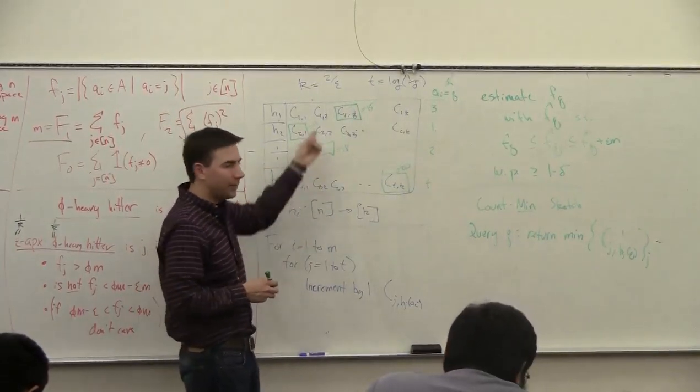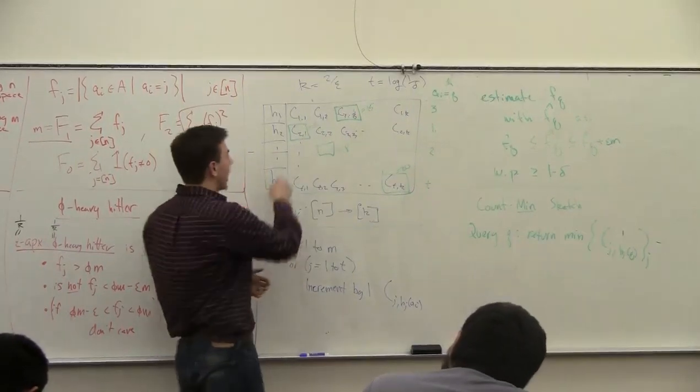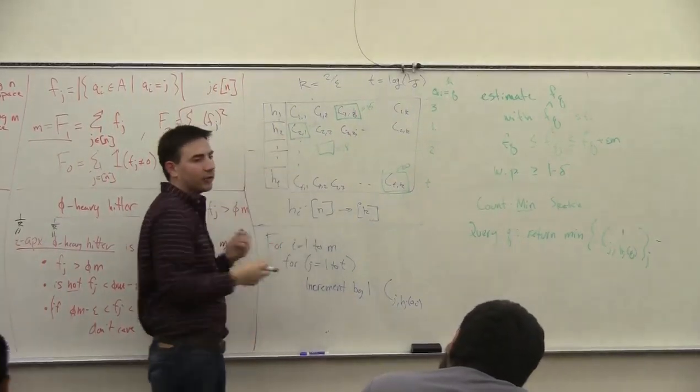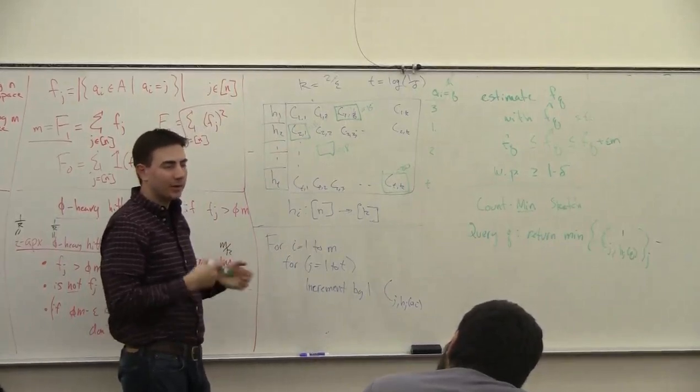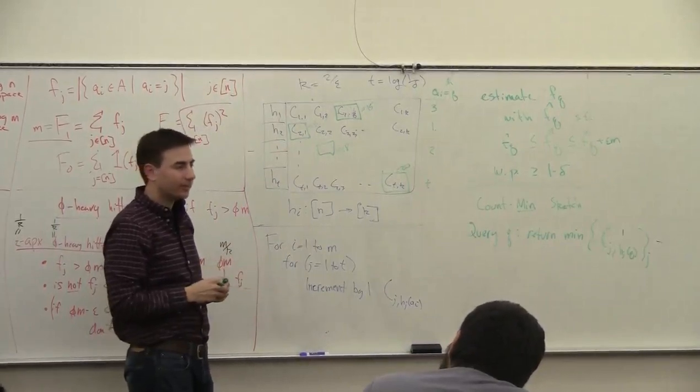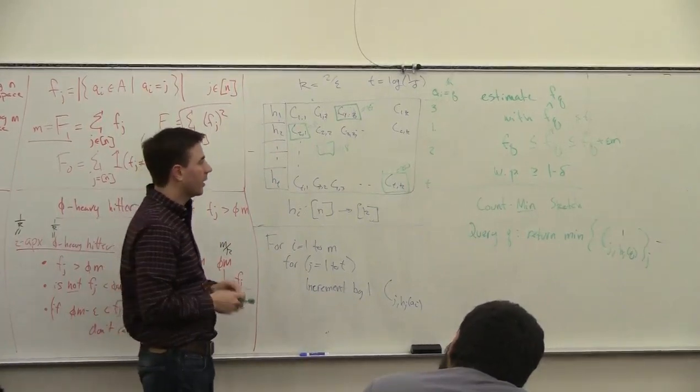You don't have a label anywhere, but the hash functions essentially have to store something about as large as a label. So you're not really saving by not storing the labels.